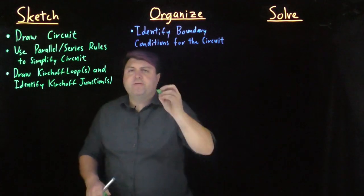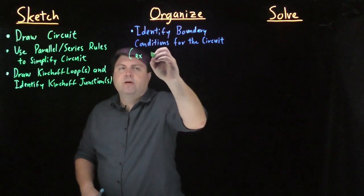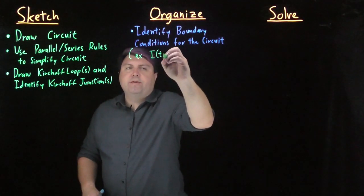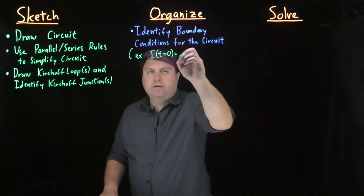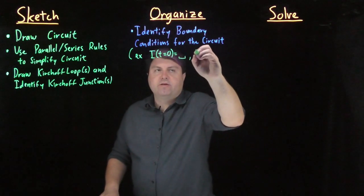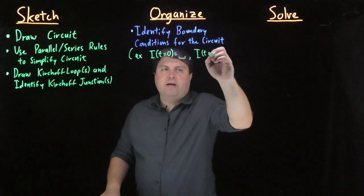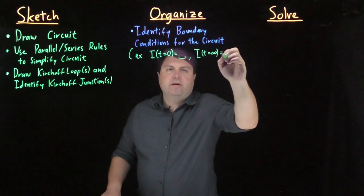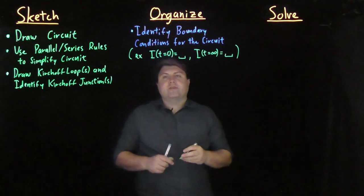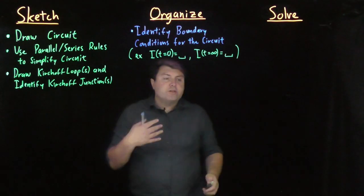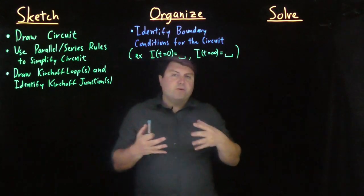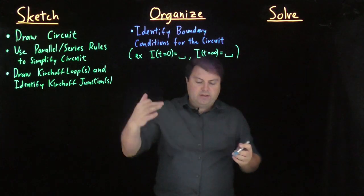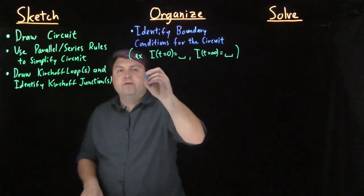So examples of this could be that we might ask what the current at time t equals zero is, and then we'd have some sort of answer. Or maybe the current at time t equals infinity, and we'd have some sort of answer for that. Could also be charge, could also be the derivative of the current. Whatever we're given or whatever we can suss out from the details is going to be very useful for us.